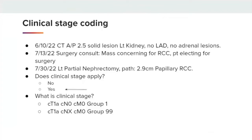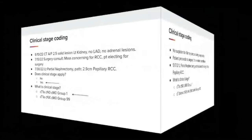Does the clinical stage apply? Yes, it does. The reason being, the patient had workup for the suspicious lesion, and the surgeon indicated concern that it was positive for renal cell carcinoma. Therefore, you can apply that information to a clinical stage. The clinical stage would be cT1A due to the documented 2.5 centimeter size, cN0, cM0, for a Group 1.